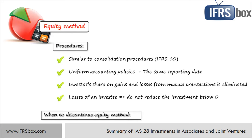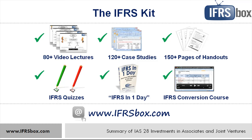Finally, you should stop applying the equity method when your significant influence ceases to exist, for whatever reason. For example, when an investor acquires additional shares and significant influence upgrades to control, the investor stops the equity method and starts full consolidation. This was a short summary of IAS 28, investments in associates and joint ventures. If you want to improve your IFRS skills, you are welcome to check out my IFRS kit or subscribe for the free weekly newsletter at ifrsbox.com. Bye-bye and thank you for watching.